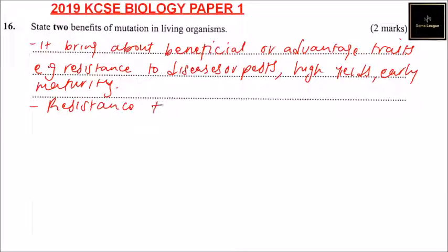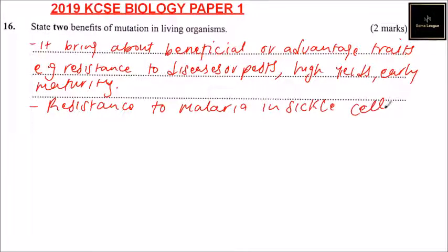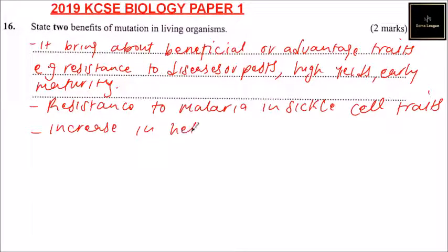Another benefit is resistance to malaria in sickle cell traits. Another one you can mention is increase in heterozygosity or variation.